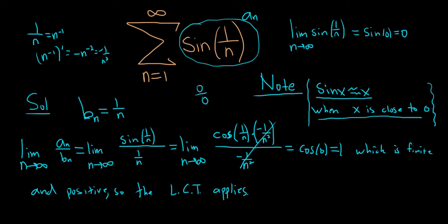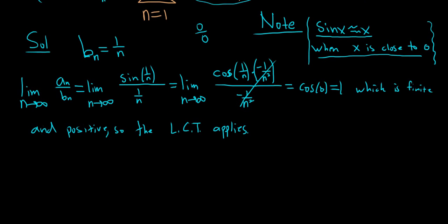So the LCT applies. And the limit comparison test says that the sum of the A's and the sum of the B's will both behave the same. So if one converges, the other converges as well. If one diverges, the other diverges as well. So now we simply have to explain what happens to the sum of the B's.